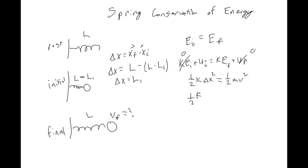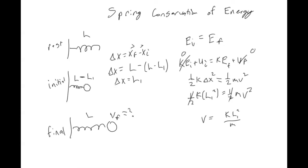Delta x equals L₁ (x_final = L, x_initial = L − L₁). Plugging into our equation, the one-halves cancel, and the final velocity equals the square root of kL₁² over m, or equivalently the square root of (k/m) times L₁. The reason there's no negative sign in front of the spring potential energy is that we want it to be positive so the math works out.